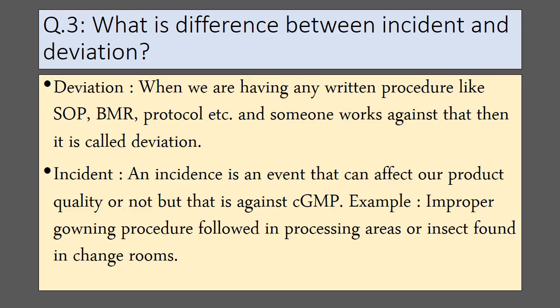What is the difference between incident and deviation? When we have a written procedure like SOP, BMR, or protocol, and someone works against that, it is called deviation. In the case of an incident, it is an event that can affect product quality or not, but it is against CGMP. For example, improper gowning procedure followed in processing areas, or an insect found in changerooms.